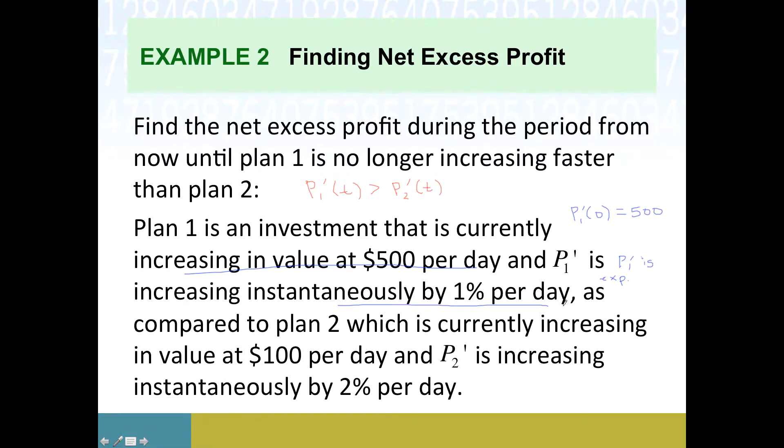And then once we get past that hurdle, then we're going to apply the same kind of principles to plan two. It's currently increasing in value at $100 per day. So this is telling me that P2 prime right now is $100. So notice that P1 prime, kind of as predicted, is increasing faster right now. Its derivative is a larger value than P2. And then P2 is increasing instantaneously by 2% per day. So also P2 prime is an exponential function because it is also increasing at a percentage rate. That's what it means to be an exponential function.